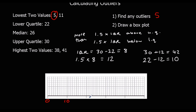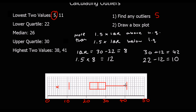So again, we're going to draw the box plot. 5 is an outlier, so we're going to mark it with an X. Then our new lowest value is 11. The lower quartile is at 22, the median at 22, the upper quartile at 30, and the highest value is at 41. So again, join up the box, draw on the whiskers, and there we have our box plot.